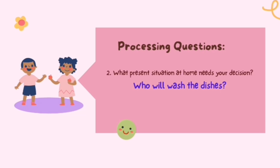What present situation at home needs your decision? For example: who will wash the dishes? Nagtuturoan tayong magkakapatid kung sino ang maghuhugas ng mga pinagkainan — sa umaga, sa tanghali, o sa gabi. Simple lang ang problema, pero laging ganito tayo. Ito ang mga maliliit na bagay na ating pinag-dididesisyunan sa loob ng ating tahanan.